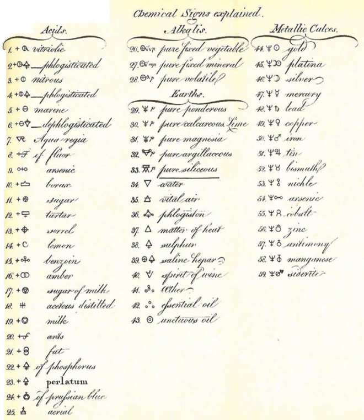The twelve operations and their associated zodiac signs are: Calcination, Congelation, Fixation, Dissolution (Cancer), Digestion (Leo), Distillation (Virgo), Sublimation (Libra), Separation (Scorpio), Fermentation (Sagittarius), Putrefaction (Capricorn), Multiplication (Aquarius), and Projection (Pisces).